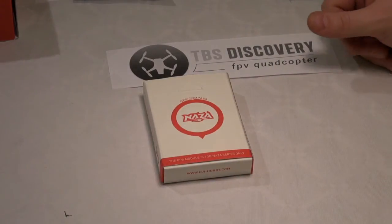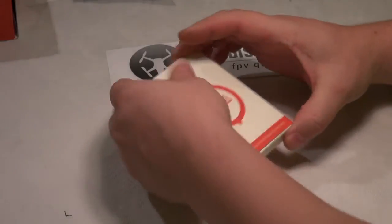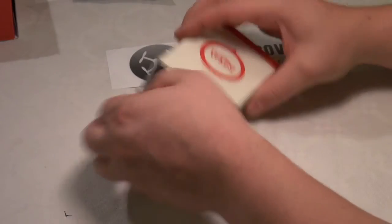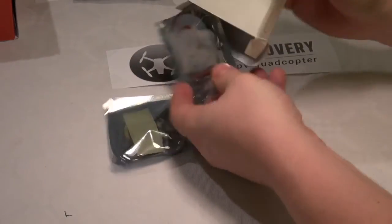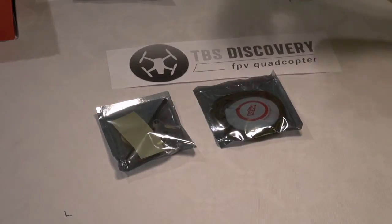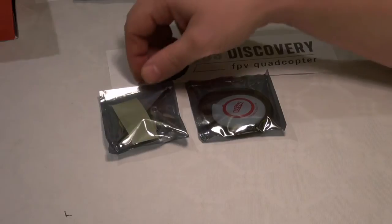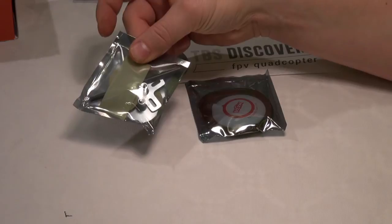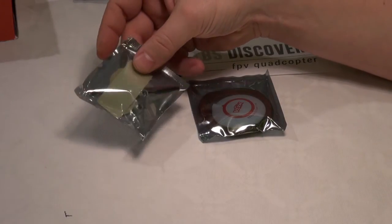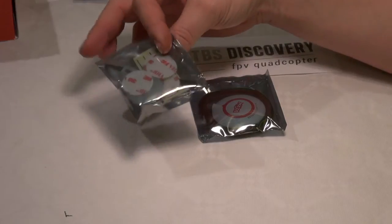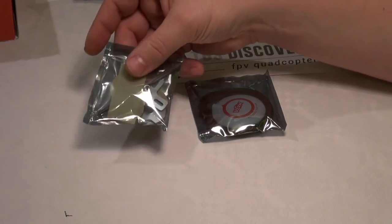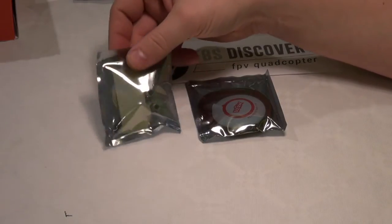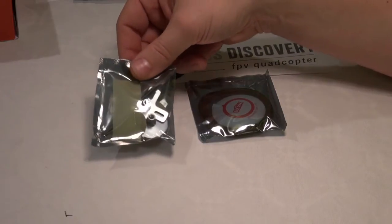Now we have the NAZA GPS and compass box. Let's have a look what's inside that box. We have two ESD bags, one bag with the post mount, one bottom, one top, and it looks like a carbon tube. I will open this package when we are ready to mount it, so all the small parts don't disappear during our build.